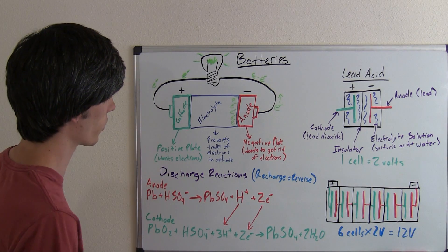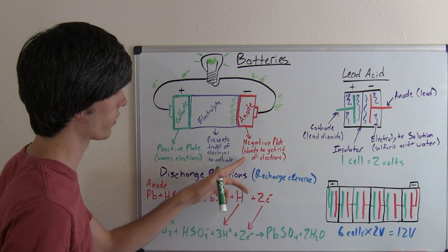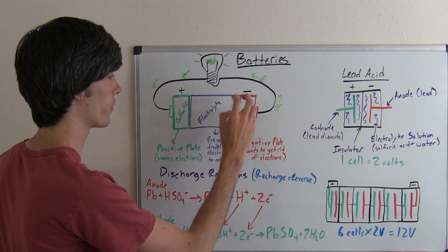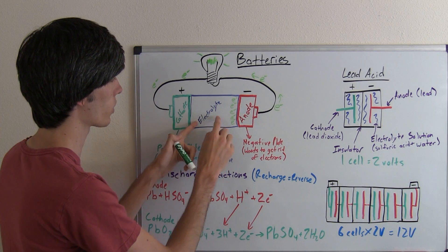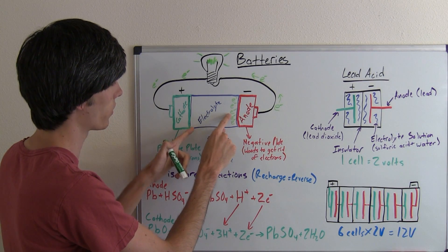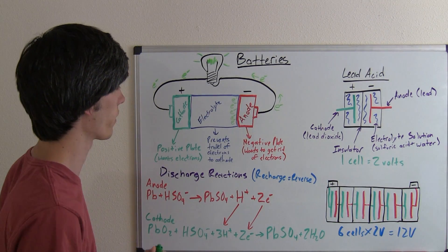And then you have an anode on the other end of the battery, and that's a negative plate, and so it wants to get rid of electrons, so it has too many electrons. Then in the center you have an electrolyte, and what this electrolyte does is it prevents these electrons here from simply going over to the cathode. So it's a separator between the anode and the cathode.